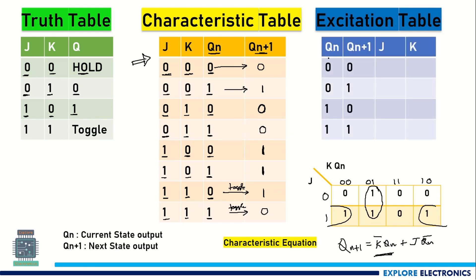We need to take Qn and Qn+1 as known. So when Qn is this and Qn+1 is this, what are the expected input values we need to provide? For the first case, when Qn is 0 and Qn+1 is 0...